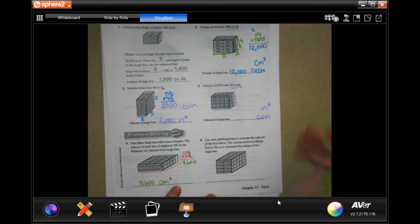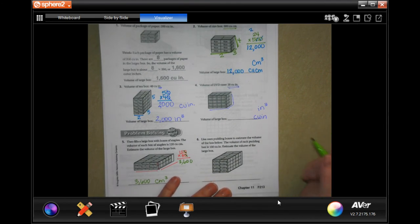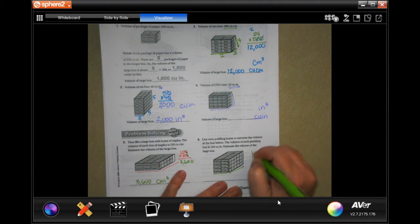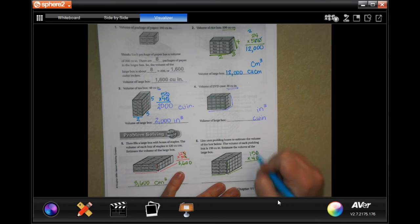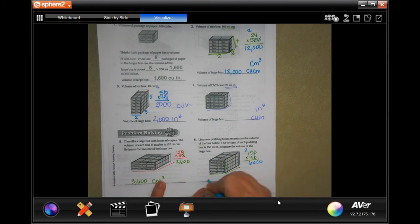Lisa uses pudding boxes to estimate the volume of the box below. The volume of each pudding box is 150 cubic inches. Estimate the volume of the large box. So 2 times 5 times 4. Two times five is 10, times four is 40. And each one of those is 150. Take off those two zeros, put them at the end. Four times five is 20, carry the two. Four times one is four, plus two is six. 6,000. And inches cubed or cubic inches, take your pick.